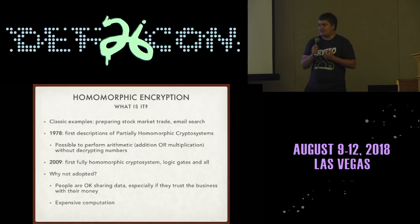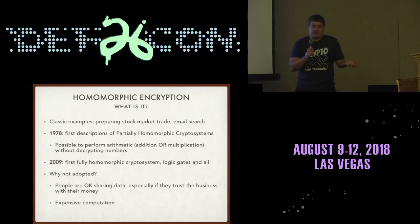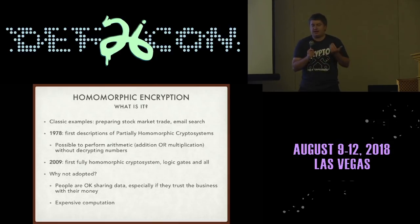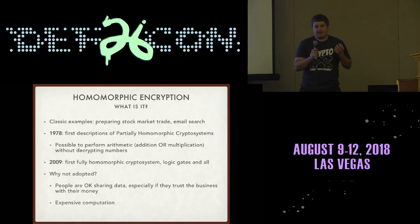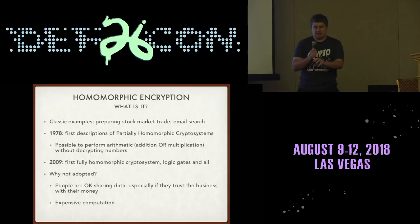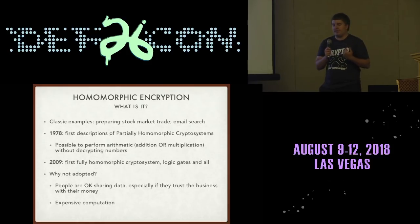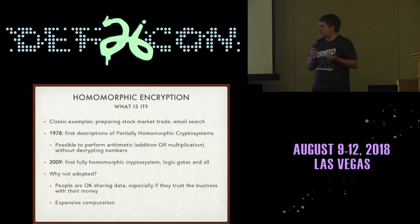The other example — this is a commercial product — is that Google has access to all the plain text of all your emails because when you search, Google needs to be able to search that text. There's a particular service where they encrypt all of your emails on the server, and you send an encrypted search query to search your email without revealing what your email contains or what you're searching.